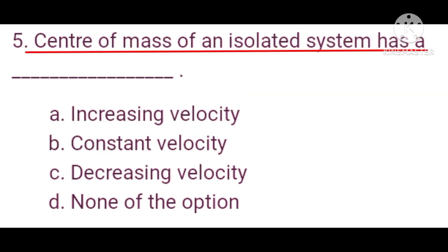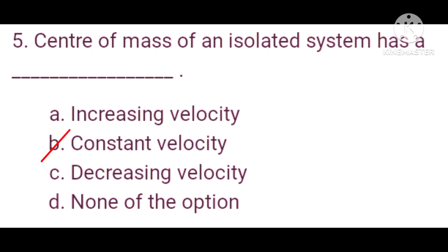Question number five: the center of mass of an isolated system has a constant velocity. Option B is the correct answer.